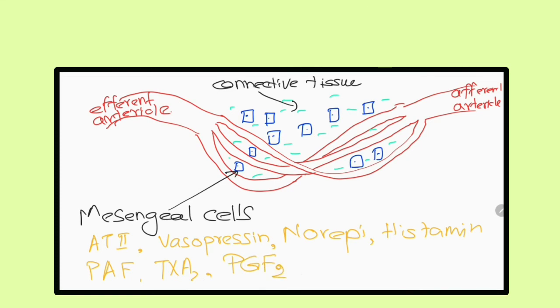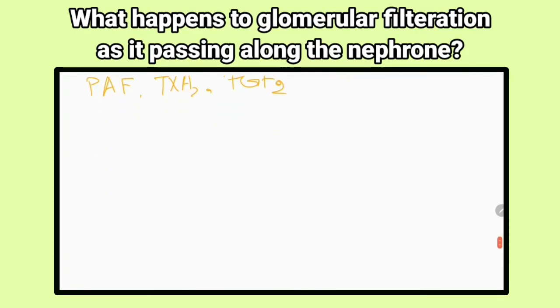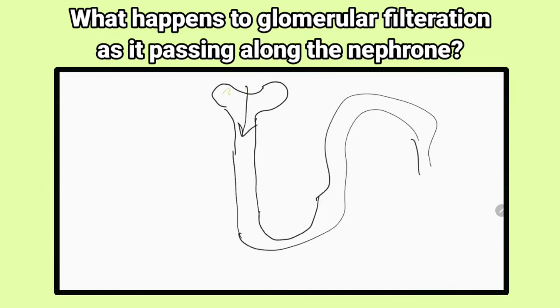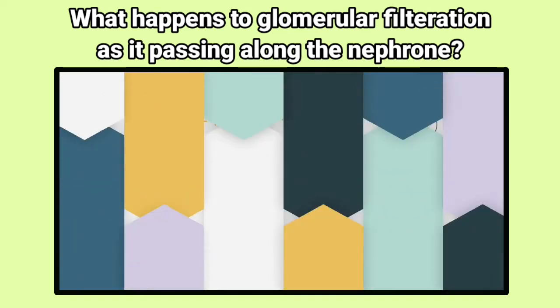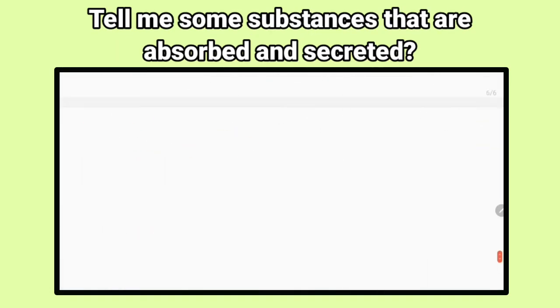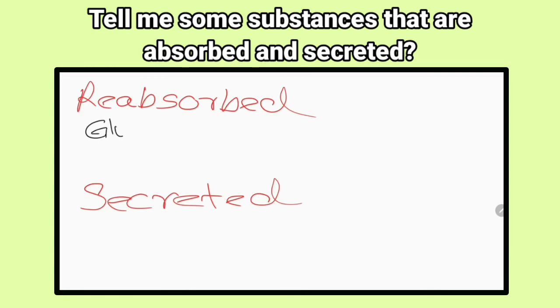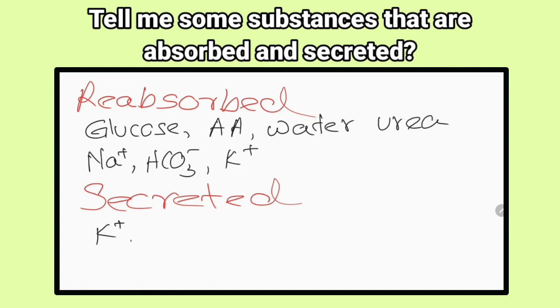What happens to glomerular filtration when it passes along the nephron? Most of the fluid and substances are reabsorbed from the glomerular filtrate. Some substances are secreted into the filtrate by renal tubular cells. Glucose, amino acids, water, urea, sodium ions, potassium ions, and bicarbonate ions are absorbed. Potassium ions, hydrogen ions, creatinine, and some drugs are secreted.